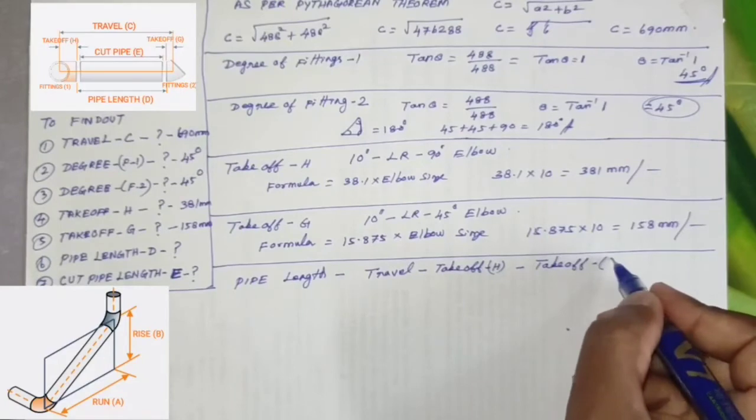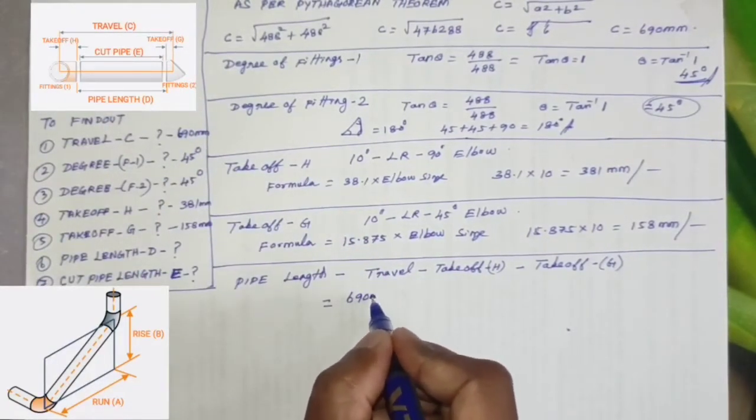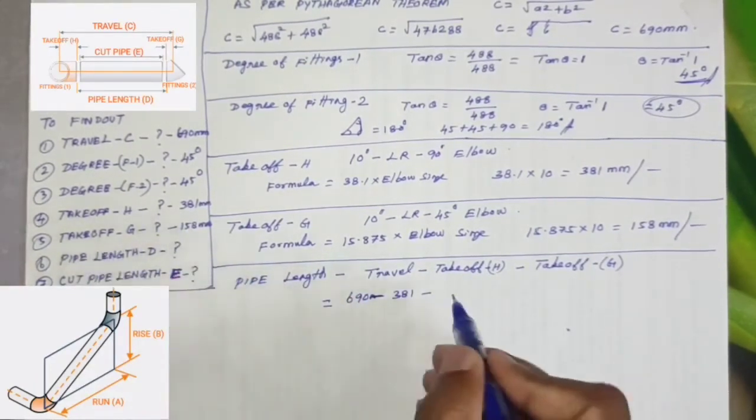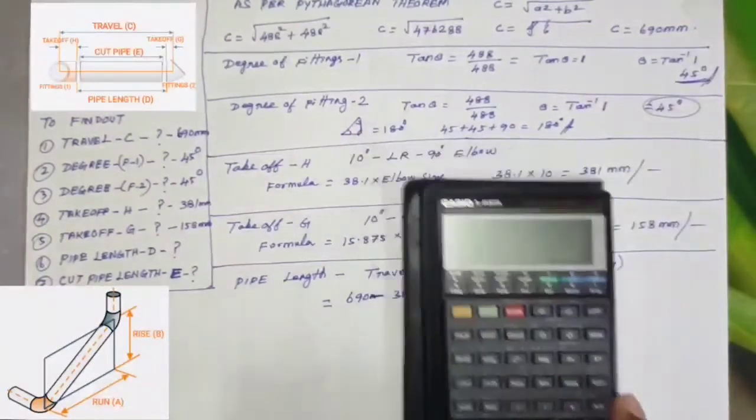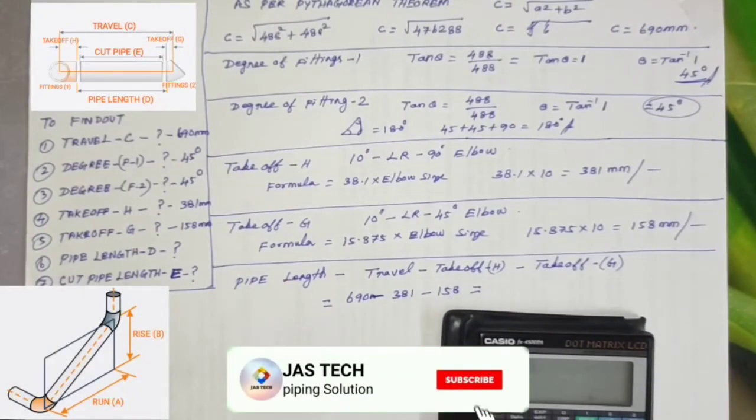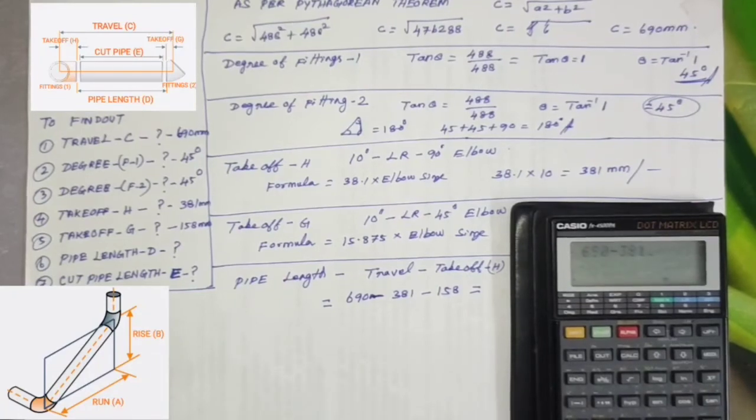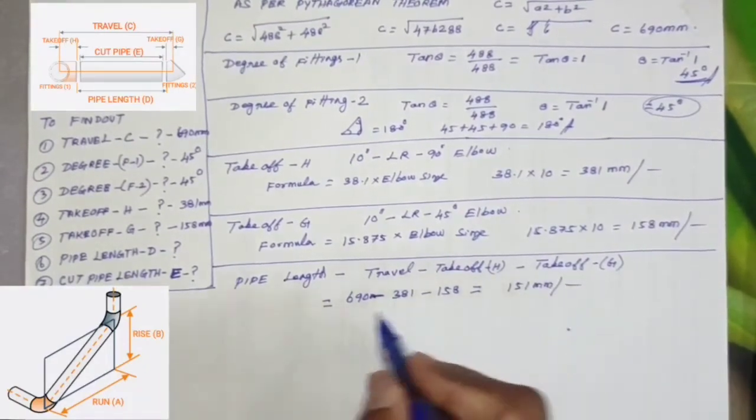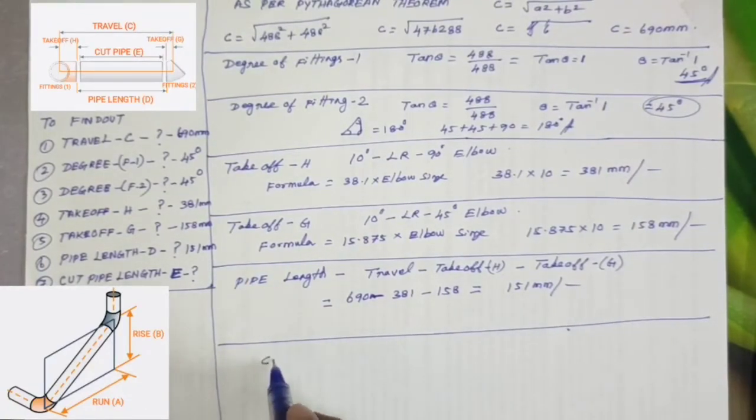Simply, pipe length equals travel minus takeoff H minus takeoff G. So we know travel is 690 mm, takeoff H equals 381, takeoff G equals 158. By using our calculator: 690 minus 381 minus 158 equals 151 mm. So pipe length D equals 151 mm, that is the answer.